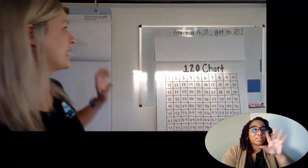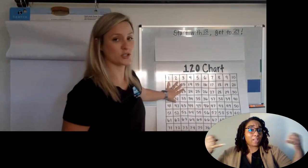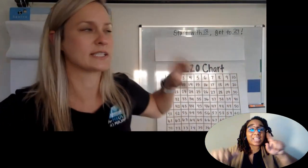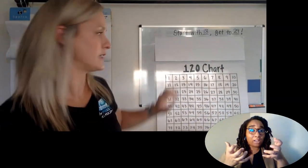All right, so we could use number lines. We could use 120 chart. We can use any tool we want. So let's think about it now. Everybody hit pause. You start with 18 and get to 29. How far away is it? All right, pause.